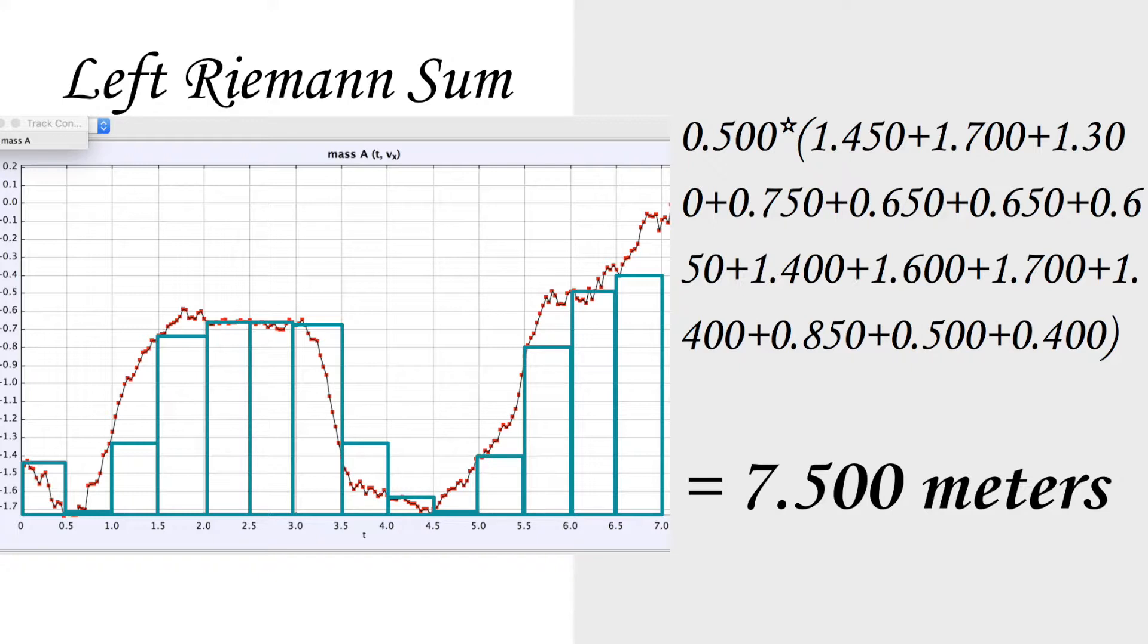Then, we'll be taking the height starting from 0 to 6.5, only taking the left coordinate of the rectangles. After these calculations, left Riemann sum tells us that Zui has walked 7.5 meters.